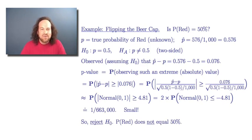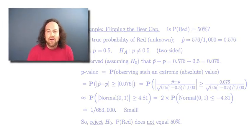Again, it's extremely small, so we can reject the null hypothesis and say that when you flip that beer cap, it's not a 50% chance of getting red. Even though the fraction was pretty close to 50%, we had enough data to conclude p is not equal to 50%. In this way, we can test hypotheses for proportions and probabilities, computing p-values to know when to reject the null hypothesis and form sound statistical conclusions.